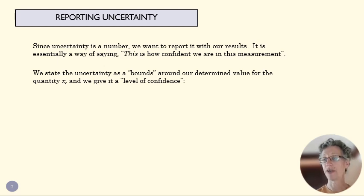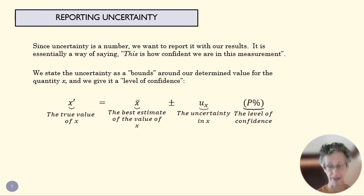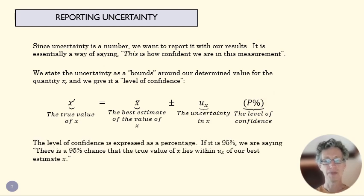And to do that, we use a couple of tools. One is bounds, which you see as a plus minus, and a level of confidence. In other words, how confident am I that it's inside these bounds? So this is standard reporting form here, where we say our true value is equal to some number plus or minus some other number, and that I think that I know that with a certain level of confidence. That level of confidence is a percentage.